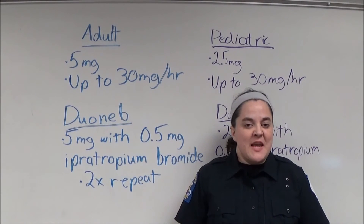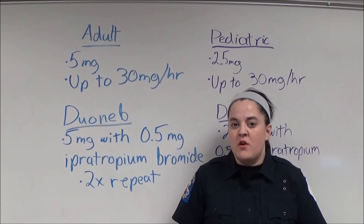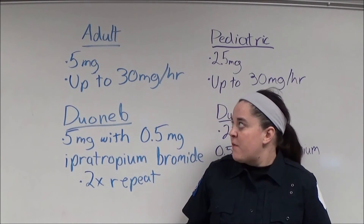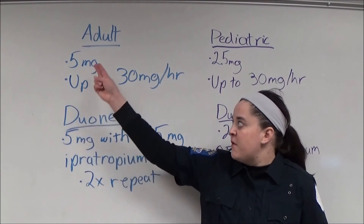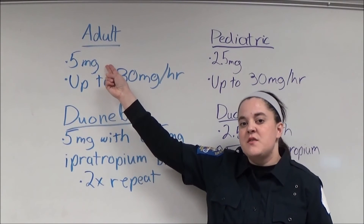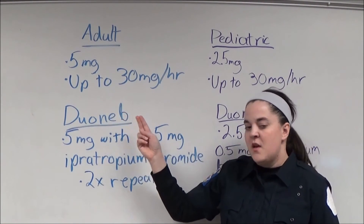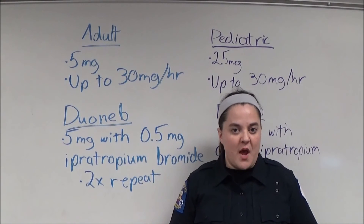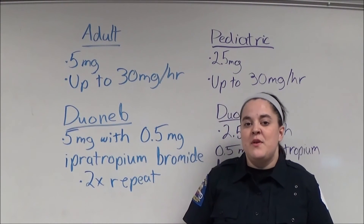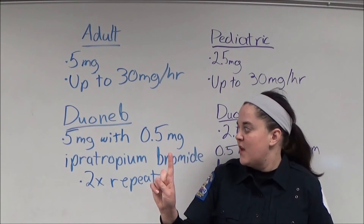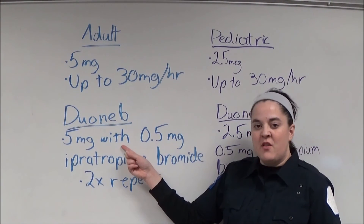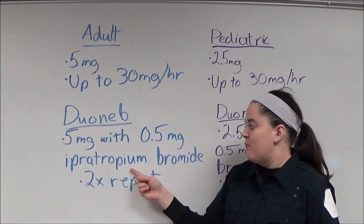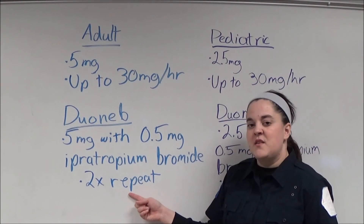Prior to administering any medication to a patient, please consult your local protocols first, as your medical director may require you to give a different dose than what I have here. For adult patients, I give 5 mg by nebulizer, up to 30 mg in an hour. Patients may also receive albuterol from a Duoneb — a Duoneb is two medications in one nebulizer. That dose is also 5 mg, but with 0.5 mg of ipratropium bromide as well, and that dose may be repeated two times.